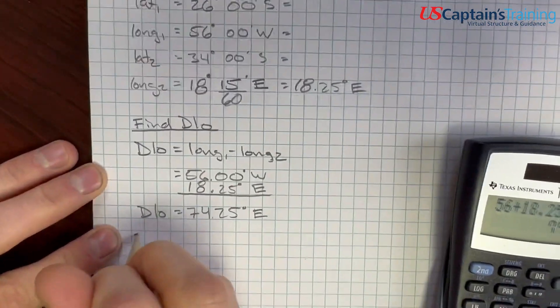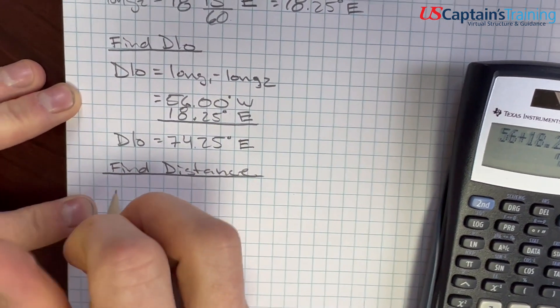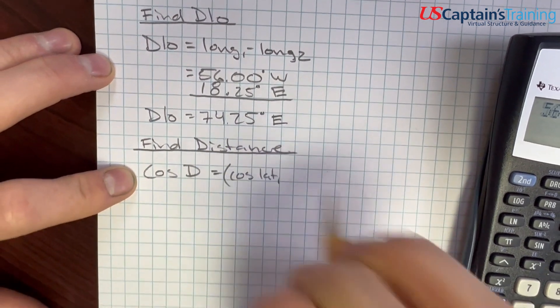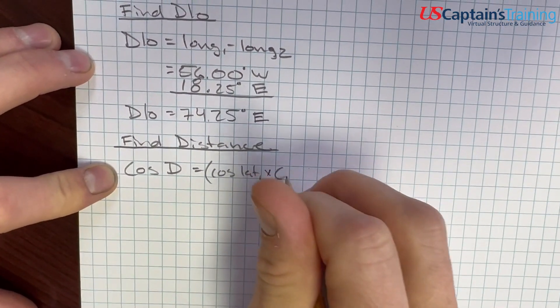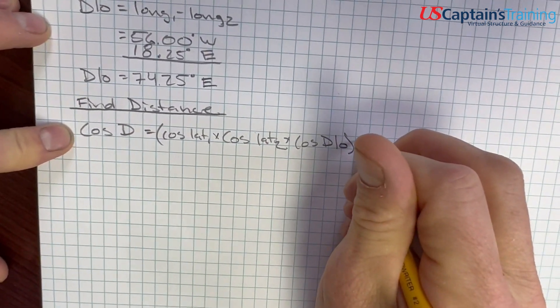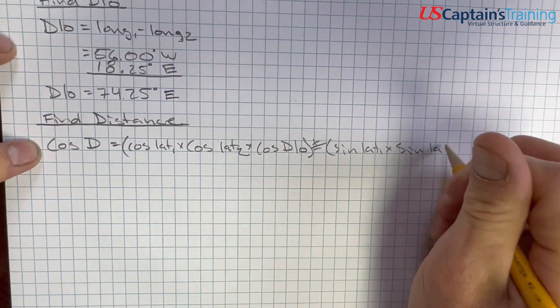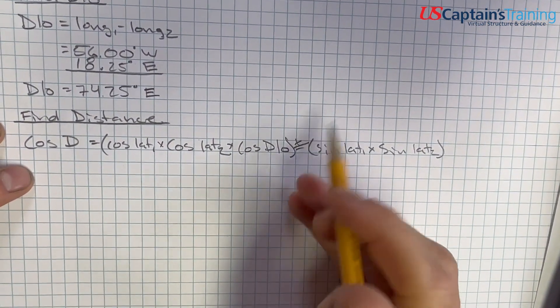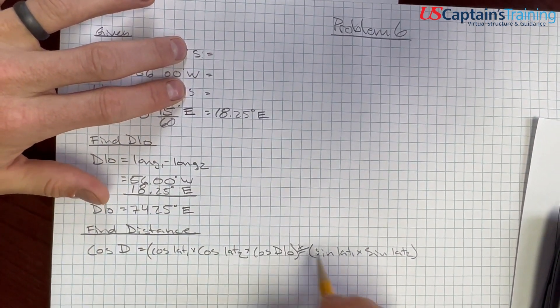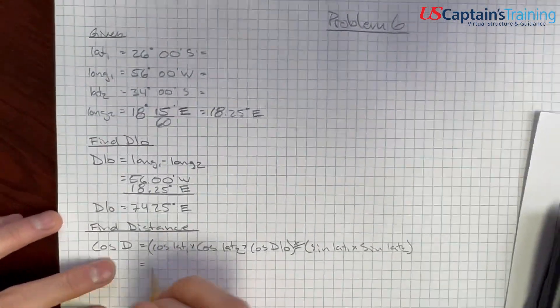Now we need to find distance. We have a nice formula for that: cosine distance equals cosine lat 1 times cosine lat 2 times cosine D low, plus or minus sine lat 1 times sine lat 2. How do we know if it's plus or minus? It is plus if we stayed in the same hemisphere. We did not cross the equator, south-south in our two lats, so it's going to be plus. It's minus if you crossed the equator.